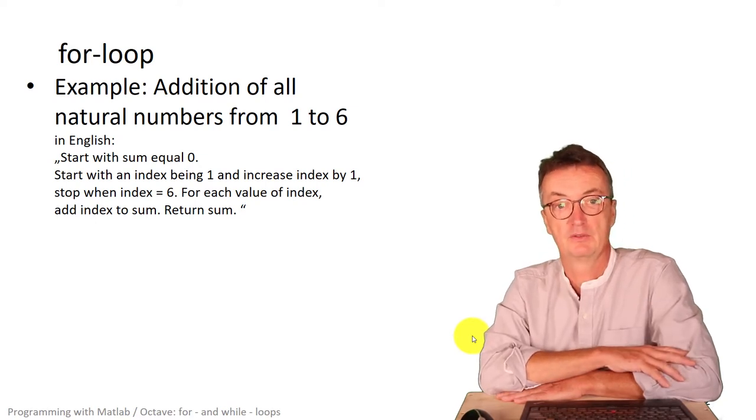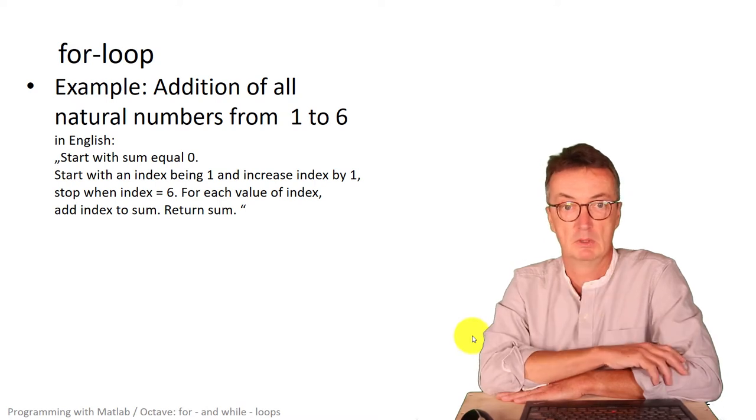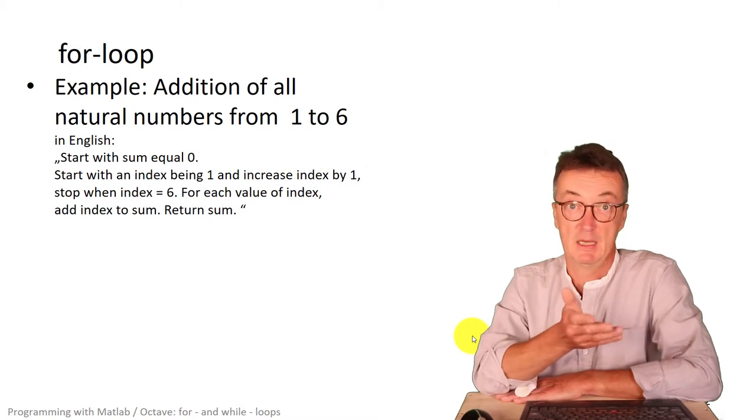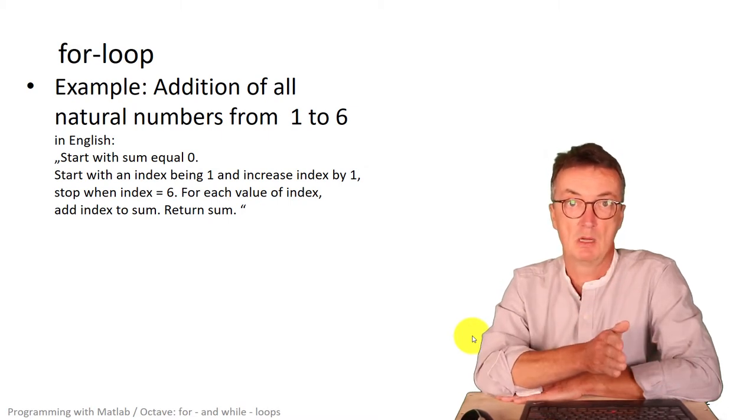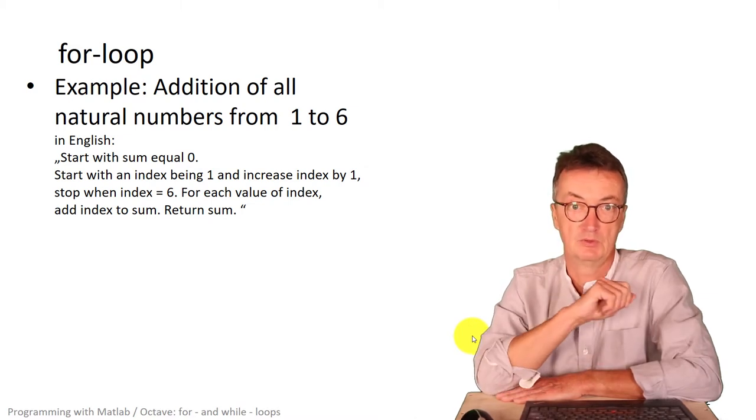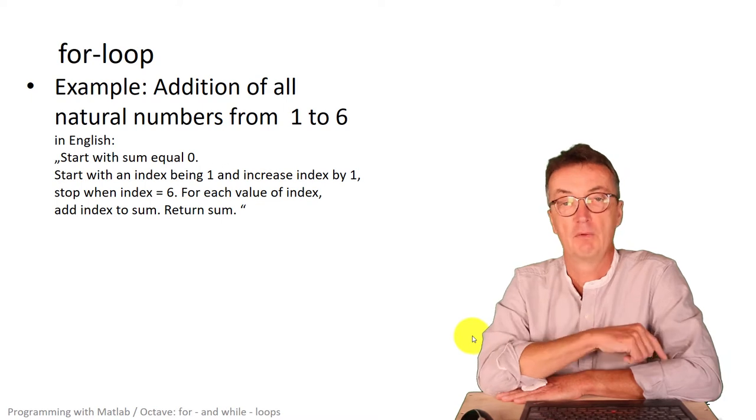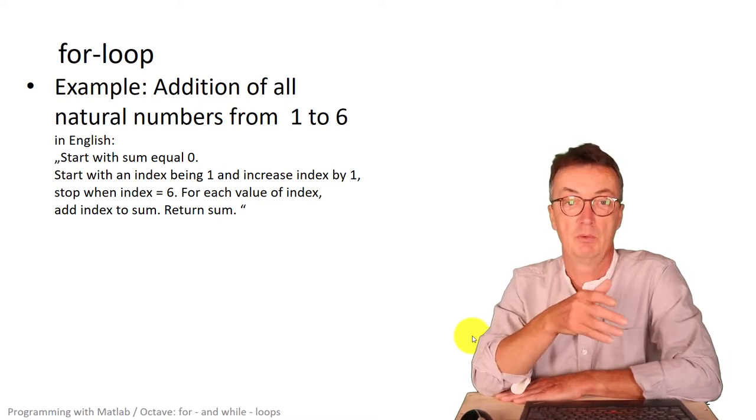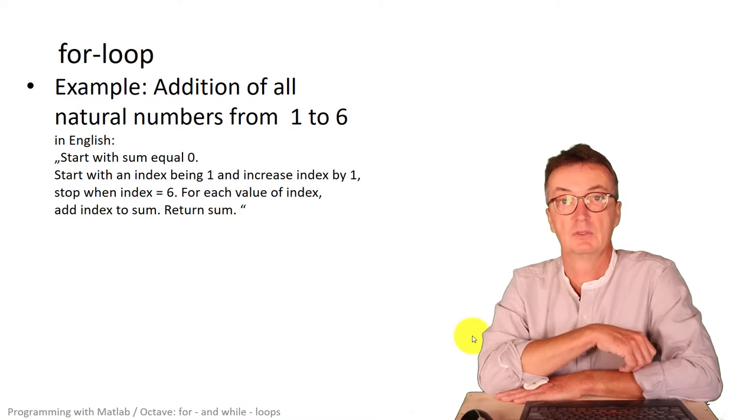Start with some variable, let's call it sum, to be zero. Then take some index, ramp that up from 1 in steps of 1 to 6 and for each of these values add this value, the index to the sum and then at the end return sum.